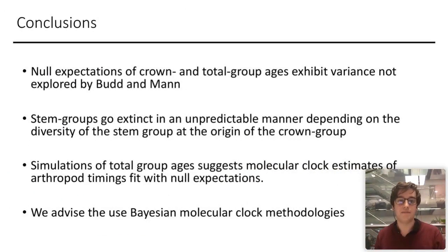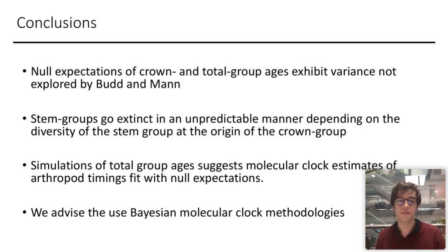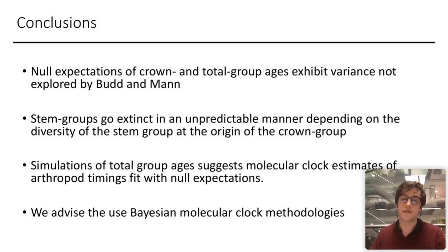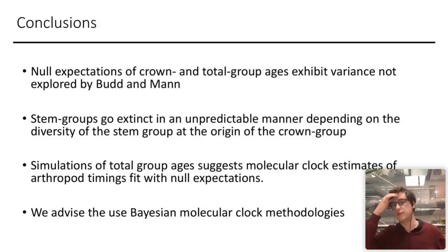To conclude: the null expectations of crown and total group ages are highly variable. We also show that stem groups tend to go extinct in an unpredictable manner, depending on the diversity of the stem group when the crown group emerges. We also show that simulations of euarthropod total group ages are in line with molecular clock estimates. Based on this study and many others, if you want to derive divergence times you should use Bayesian methods that incorporate lineage-specific rate variation and as many fossil calibrations as possible.